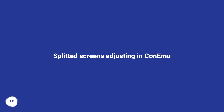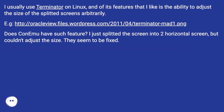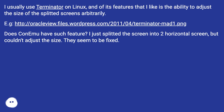Split screens adjusting in ConEmu. I usually use Terminator on Linux, and one of its features that I like is the ability to adjust the size of the split screens arbitrarily, e.g. this URL. Does ConEmu have such a feature? I just split the screen into two horizontal screens but couldn't adjust the size. They seem to be fixed.